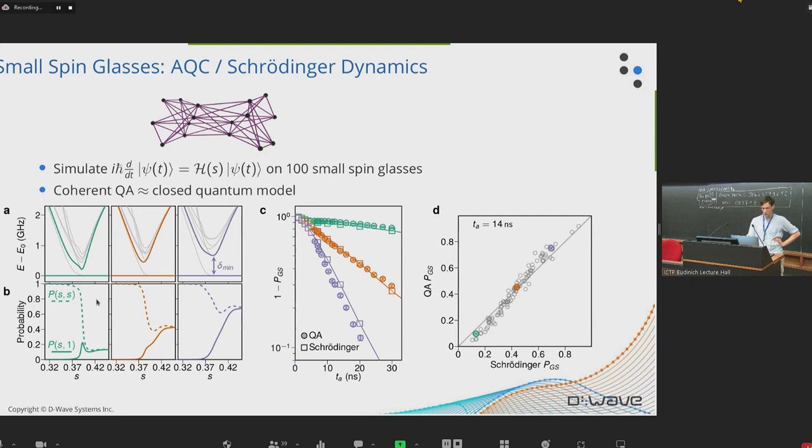And we can also simulate, classically, the Schrodinger dynamics. And we can look at the projection of the current state onto the instantaneous ground state and the final ground state. So what we want to look at in terms of the success probability is the final ground state. So where does this solid line end up? And these are all 14 nanosecond anneals for three different instances that I've just picked to represent this distribution. And you can see that the success probability kind of depends on the size of the gap. And we can look at the scaling in terms of annealing time. And we can see that they basically follow an exponential scaling in annealing time. The excitation probability does. And this is what you would expect from a system whose excitation mechanism is dominantly described by a single Landau-Zener transition. So what we see here is experimental results and Schrodinger results.